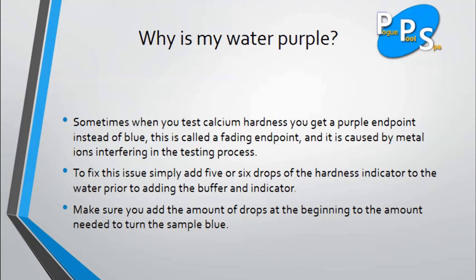Your water may turn purple and you may wonder why. Sometimes when you test calcium hardness you get a purple end point instead of blue. This is called the fading end point and is caused by metal ions interfering in the testing process. To fix this issue, simply add 5 or 6 drops of the hardness indicator to the water prior to adding the buffer and indicator. Make sure you add the amount of drops used at the beginning of the test to the amount needed to turn the new sample blue.